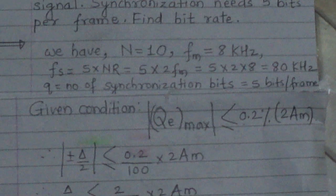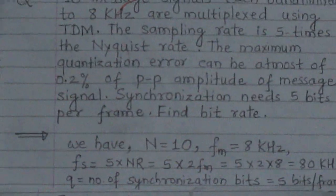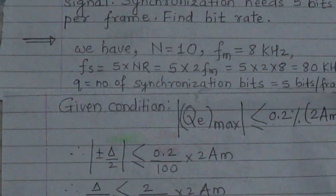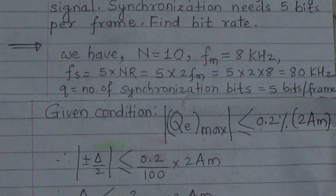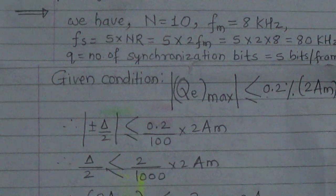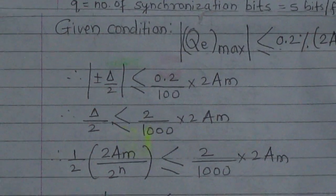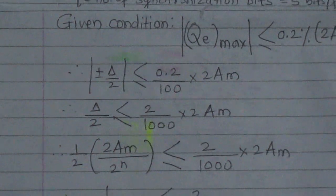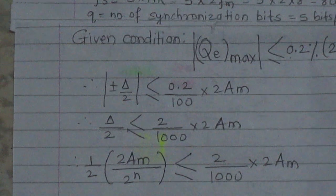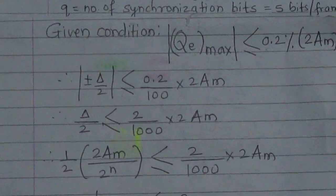From the given condition, the maximum quantization error is 0.2% of the peak-to-peak amplitude of the message signal. The peak-to-peak amplitude is twice Am. So |qe_max| ≤ 0.2% of 2Am. We know that the maximum quantization error is ±delta/2, where delta is the step size. Therefore, delta/2 ≤ (2/1000) × 2Am.